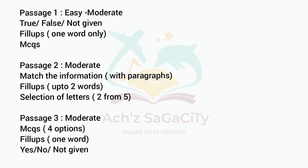Regarding the reading module for academic, in Passage 1 you can expect an easy to moderate level — mostly it will be related to a person's biography or autobiography. You can expect True/False/Not Given type of questions, fill-up type of questions with one word only, and three to four MCQs in Passage 1.